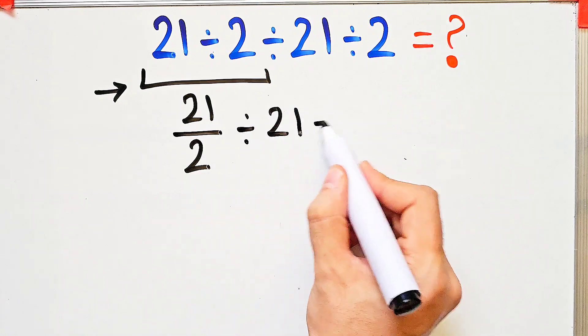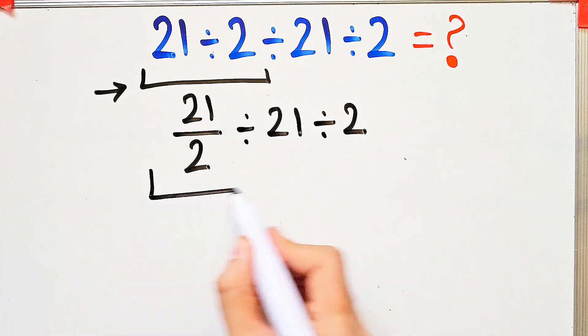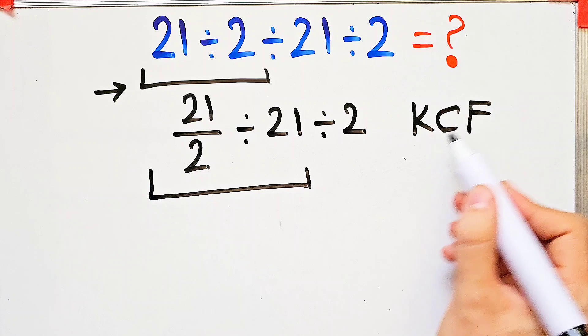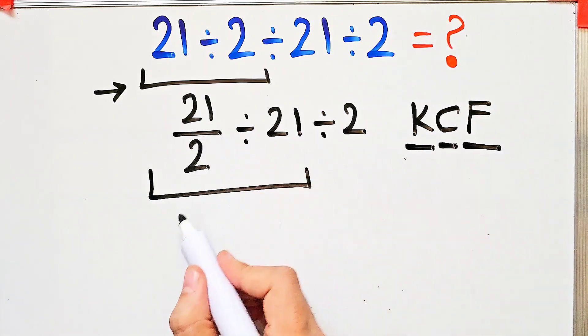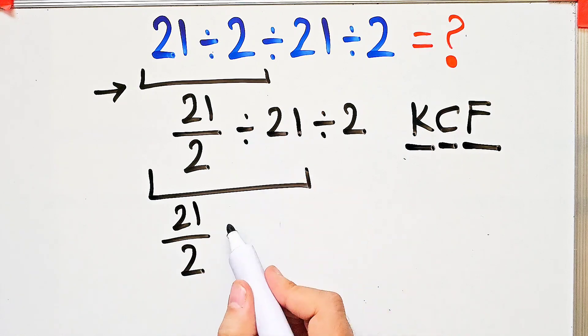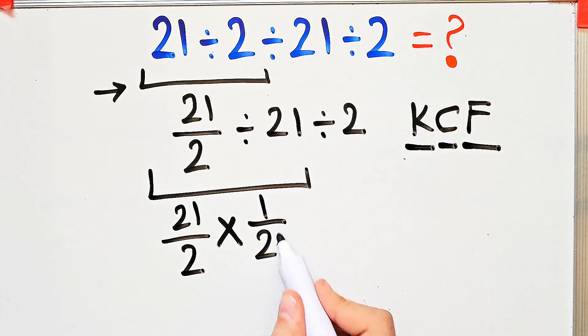To solve the first part, we need to follow the KCF rule. In this rule, K stands for Keep, C stands for Change, and F stands for Flip. We keep the first fraction as it is, then we change the division sign to the multiplication sign, and then we flip the second number.